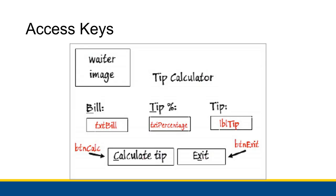In the last video when we were talking about designing the GUI, you might have noticed a couple of strange things. I did say that underlined text is not good for a GUI, and yet there are some pieces of text that are underlined, such as the B in bill, the T in tip, the C in calculate tip, and the X in exit. Those actually serve a very important purpose — they're not just there for emphasis. Those underlined letters are actually really important, and there's a reason why it's only one letter that's underlined, why it's not always the first letter of a word, like how X is underlined in exit.